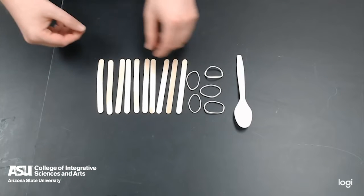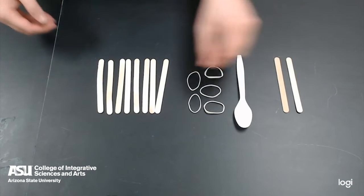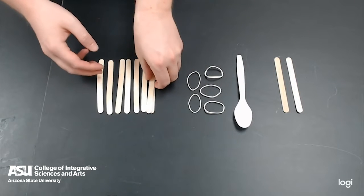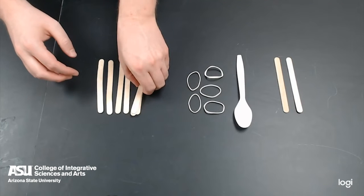For the first step take two of your popsicle sticks and set them aside for now. Now with the other eight popsicle sticks we have, you are going to stack them all on top of each other.